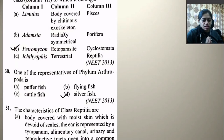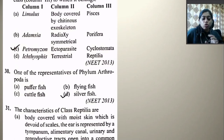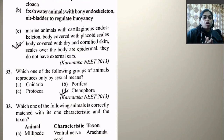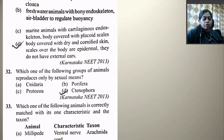One representative of phylum Arthropoda is silverfish — not puffer fish, flying fish, or cuttlefish. The characteristics of class Reptilia include body covered with dry cornified skin, scales over the body are epidermal, and they do not have external ears — this is the correct option. Which one of the following groups of animals reproduces only by sexual means? Among Cnidaria, Porifera, Protozoa, and Ctenophora — Ctenophora reproduces only by sexual means.